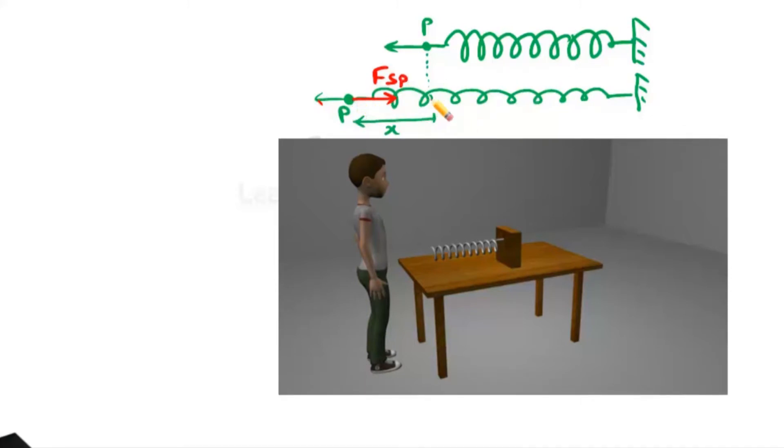Let me call this force as Fsp, that is the force of the spring. It will try to bring back the spring to the normal position. But we are doing work done against this force of the spring to displace the body by x.